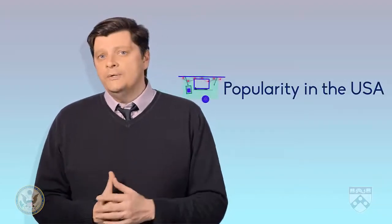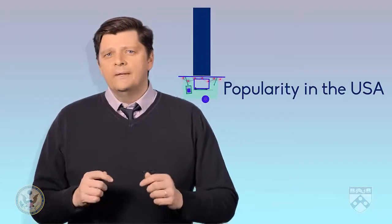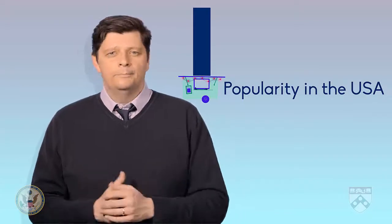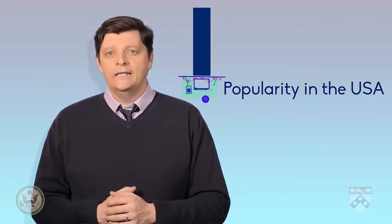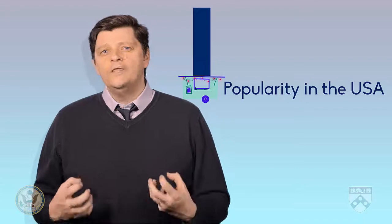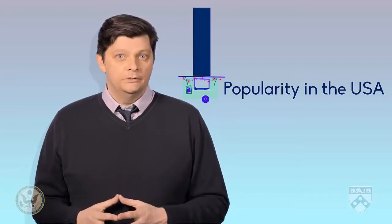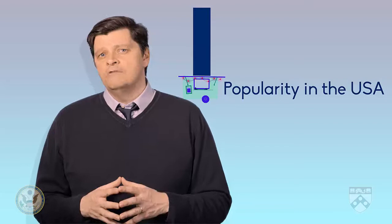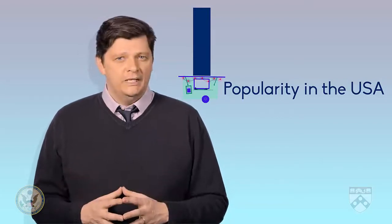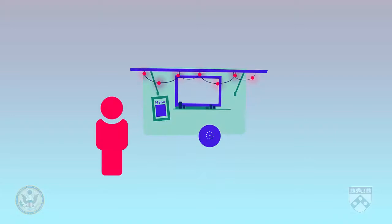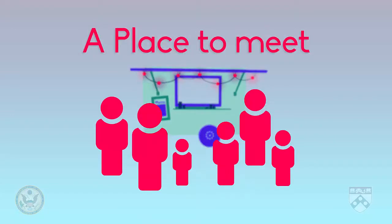Then, we can see if this story has any connection with current events. For example, in the USA, food carts are becoming more and more popular. Finally, we can say why we think the story is important. Perhaps the food cart represents more than just a place where people eat — it's a social place where people meet, talk, and develop relationships.